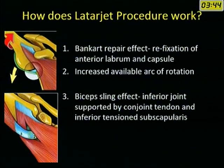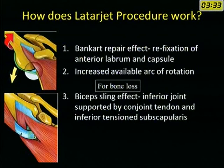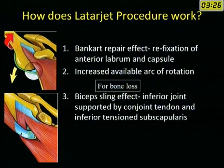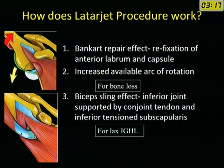The Latarjet procedure works through multiple mechanisms. When the labrum and capsule are repaired to the original glenoid, it has a Bankart-like effect. The bone grafting compensates for bone loss and increases the arc of rotation. In the position of abduction and external rotation, there is a biceps sling effect where the inferior joint is supported by the conjoint tendon and the inferiorly tensioned subscapularis, which compensates for the lax inferior glenohumeral ligament.